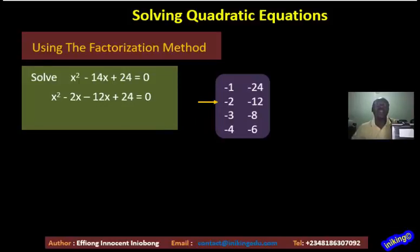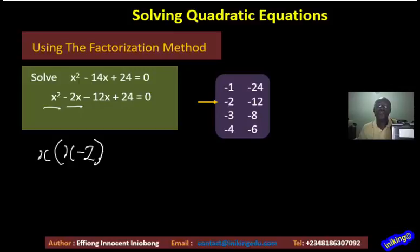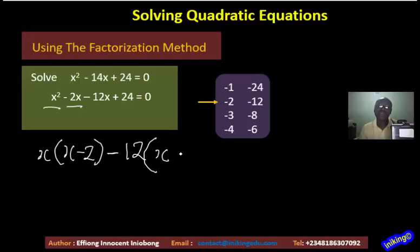Now we can start factorizing. Take x squared and minus 2x — x is common. I open the bracket: x squared divided by x is x, minus 2x divided by x gives minus 2. Bring down the minus sign, then look at minus 12x and 24 — 12 is common. Open the bracket: minus 12x divided by minus 12 gives positive x, and plus 24 divided by minus 12 gives minus 2. You can see I have the same expression in both brackets, which means I am on the right path.